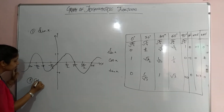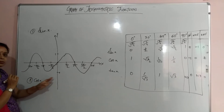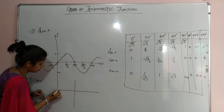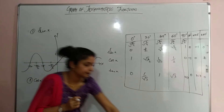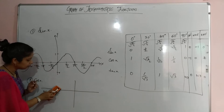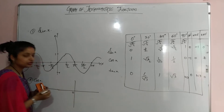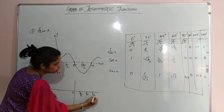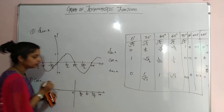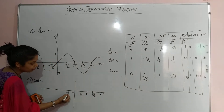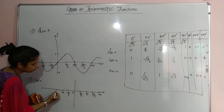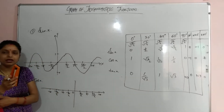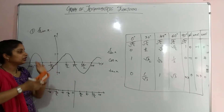Next is cos x. This is also similar to sine x — the only difference is the phase shift. Let me take the same angle values: 0, π/2, π, 3π/2, 2π, and on the negative side: −π/2, −π, −3π/2, and −2π, because after 2π the period repeats.